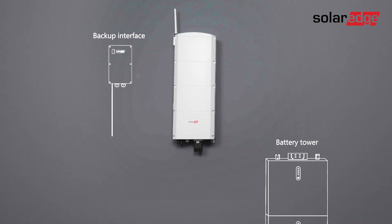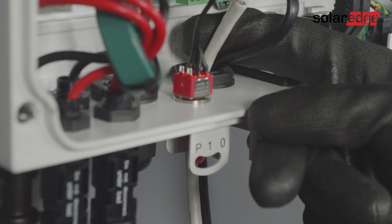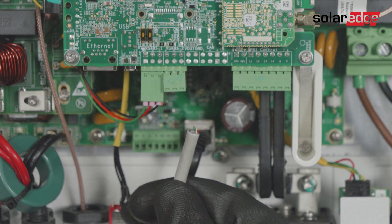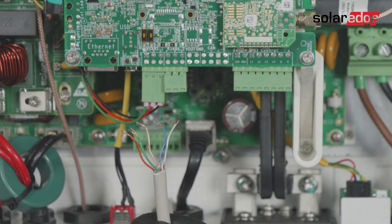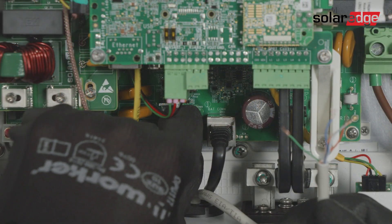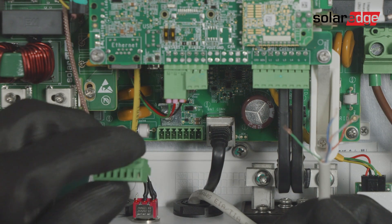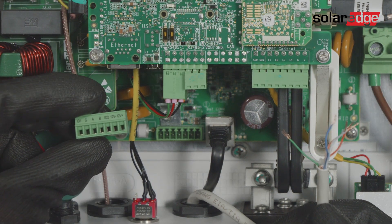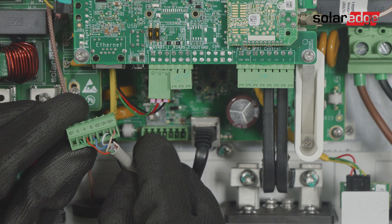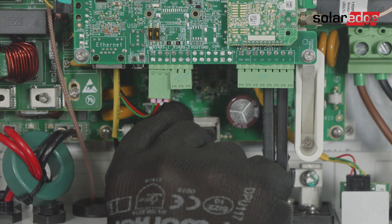Now connect the other side of the cable to the inverter. Open communication gland 1 and insert it through the gland. Take out the 7-pin connector. After connecting the wires, place the connector back.